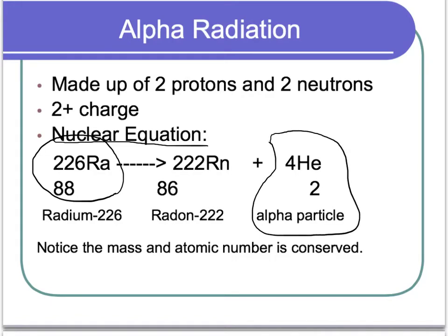An alpha particle you'll usually see denoted as He, like the helium atom. And the reason for that is because it has an atomic number of two, meaning it has two protons. And a mass number of four, because remember we said there were two protons and two neutrons. If you add those up, that gives you four for the mass number. So it emits an alpha particle.